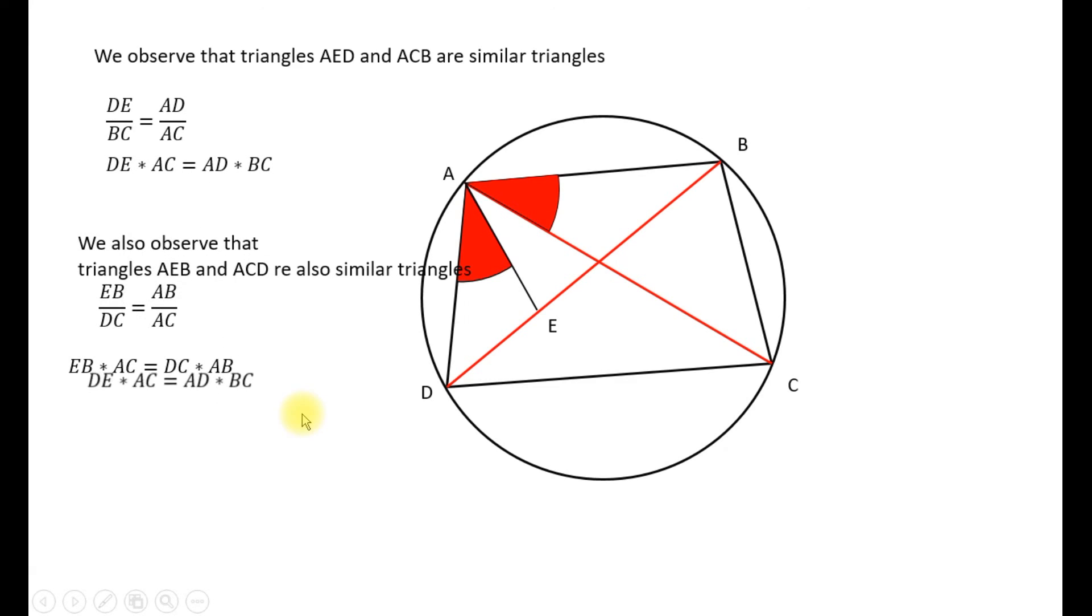Now if we take a copy of each of these equations and write them under each other and we add these two equations we'll get the left hand adds up and the right hand side is the sum of the product of the opposite sides.